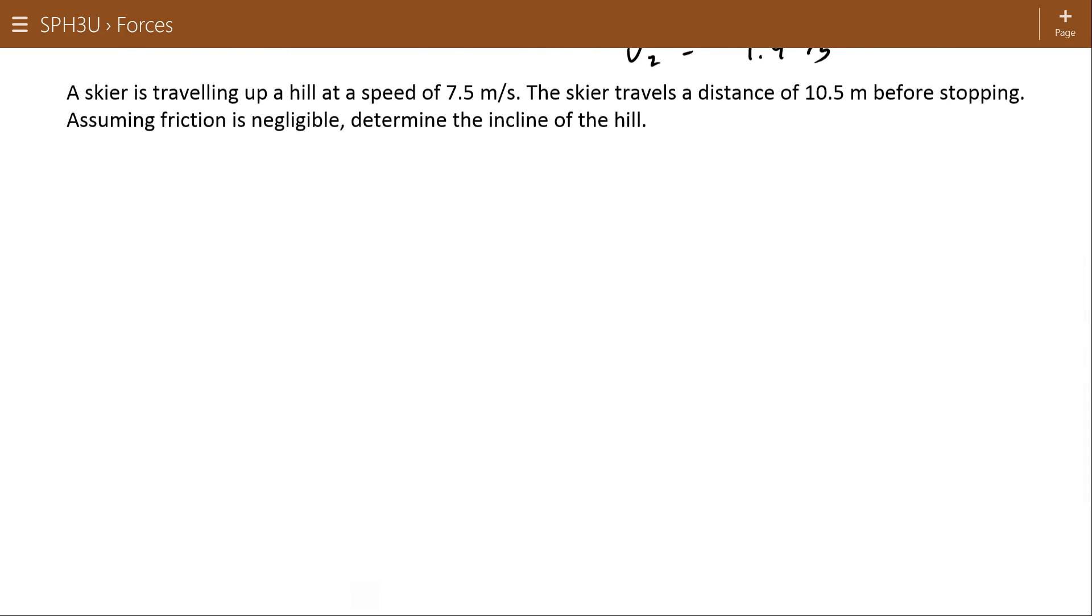Skier's traveling uphill at a speed of 7.5 meters per second. So we're going up here at 7.5 meters per second. This skier travels the distance of 10.5 meters before stopping. So they're going to go 10.5 meters up before they stop. Assuming friction is negligible, determine the angle of the incline. So this is the theta that I'm interested in. I've got kinematics information at the beginning of this question. I've got a displacement, and two velocities. So I'm going to use this formula. Remember, even if it's not clear why, if you have kinematics information, you're doing a forces question, just find acceleration, and it will work itself out.